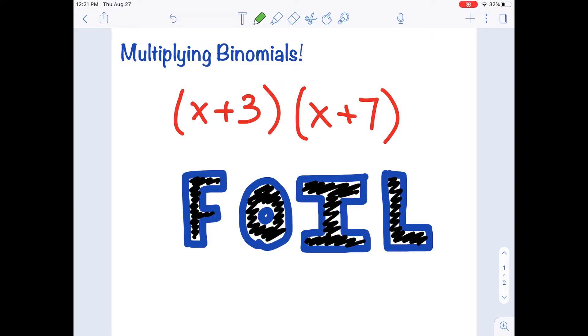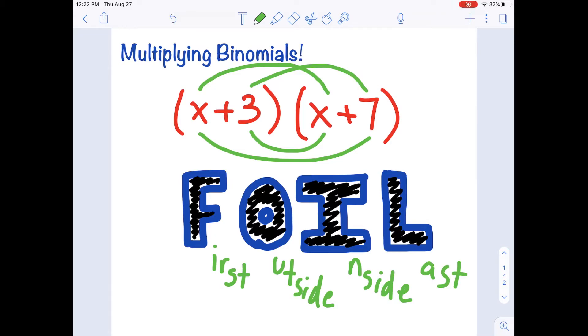The f stands for first, and that says we multiply these first two terms. The o stands for outside. So we multiply our two outside terms. i stands for inside. So we multiply these two inside terms. And the l stands for last. We multiply our two last terms.